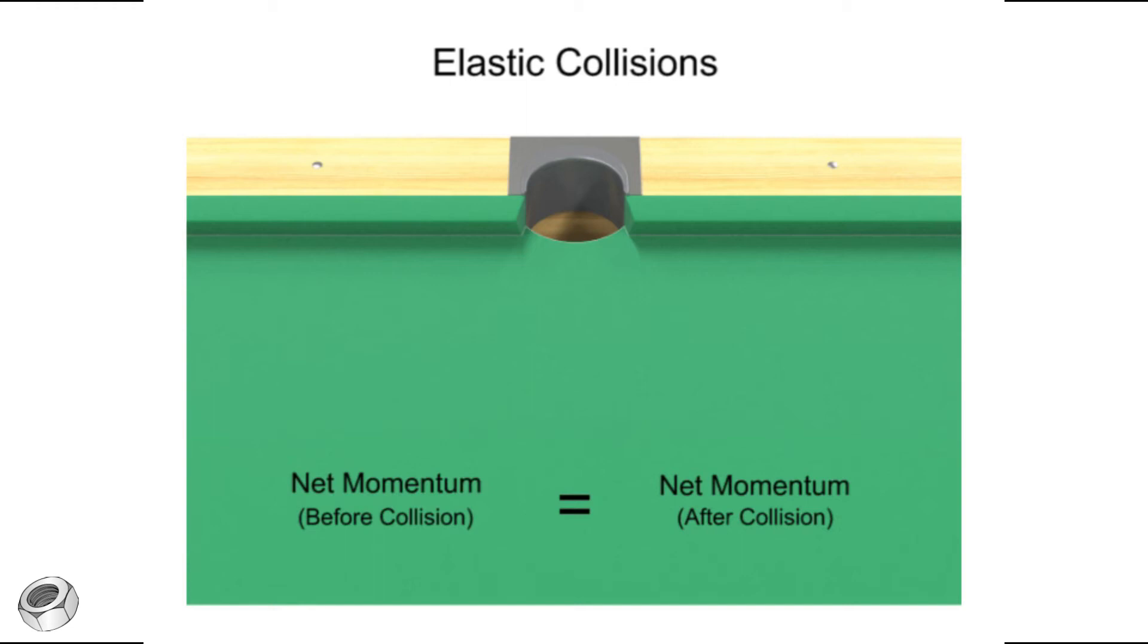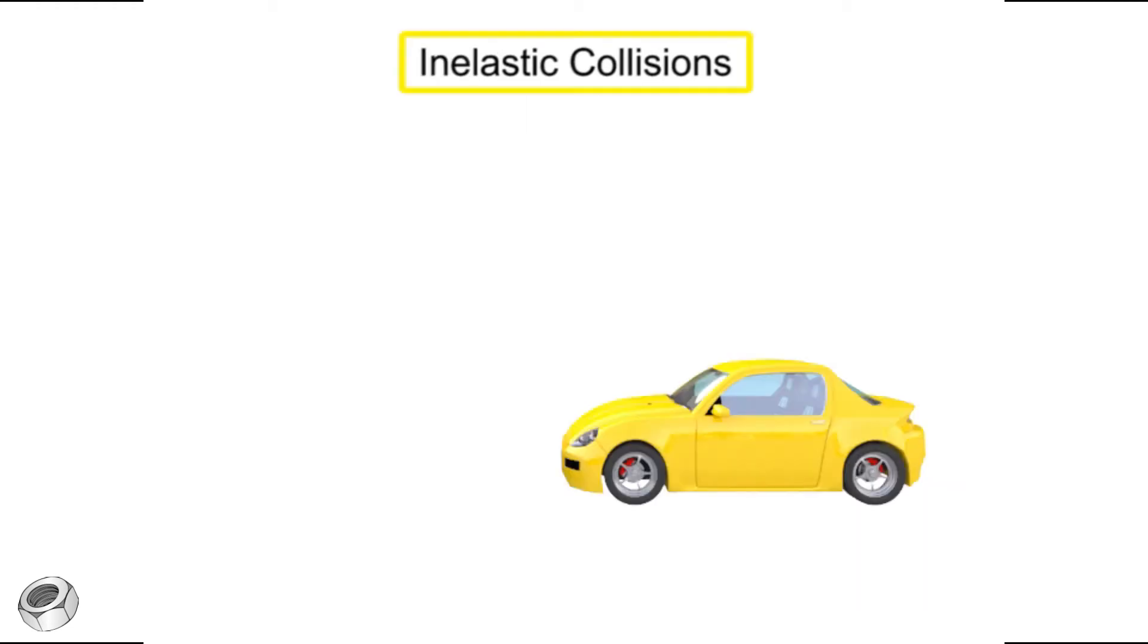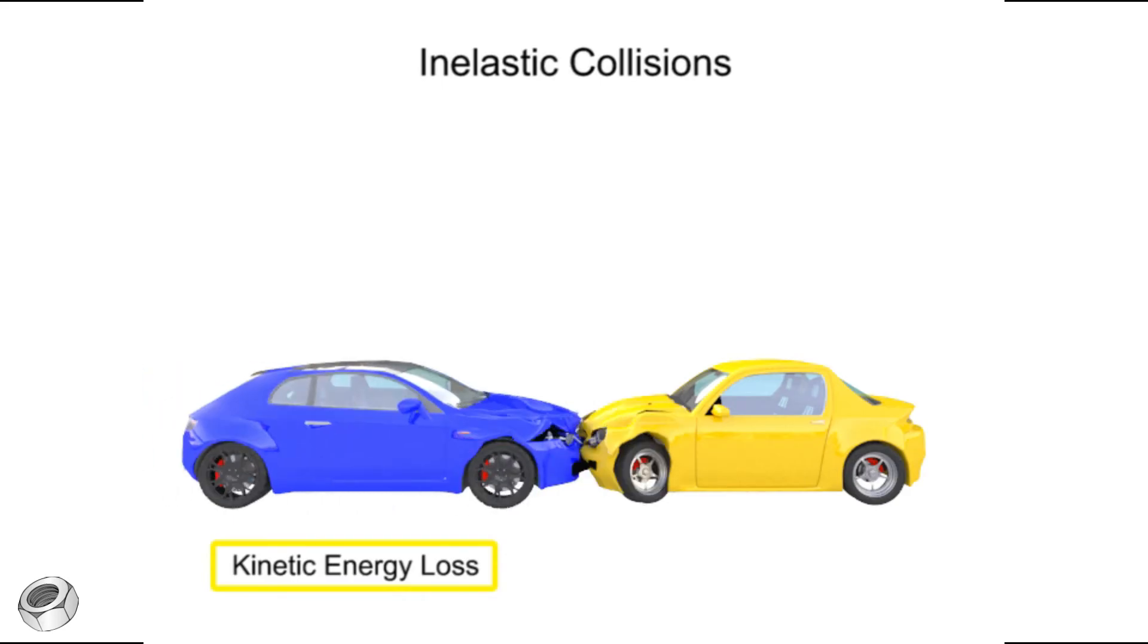The second type of collision is an inelastic collision. In an inelastic collision, momentum is still conserved, but kinetic energy is lost in the system.